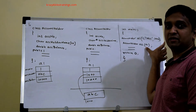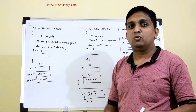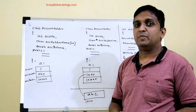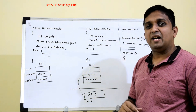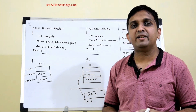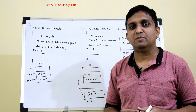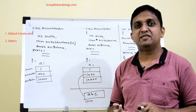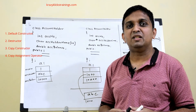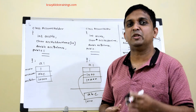When I write AccountHolder a2(a1), the copy constructor is called. The compiler provides four default functions: default constructor, destructor, copy constructor, and copy assignment operator. Since I did not write a copy constructor, the compiler's copy constructor is called and it performs a shallow copy — copying each data member as-is into the new object.